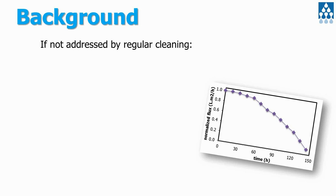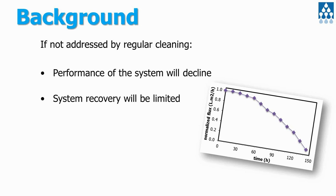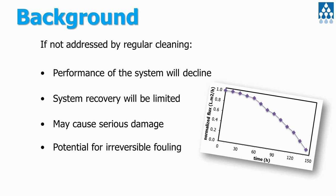If problems of fouling are not addressed by regular cleaning, there are some effects that can occur. The performance of the system will decline over a period of time — or rapidly in some cases. System recovery can be limited if it's not addressed quickly. You may have serious damage to the membranes, and there's also the potential for irreversible fouling which cannot be cleaned, meaning you need to replace your membrane. That can shorten the membrane service life and can be quite expensive.